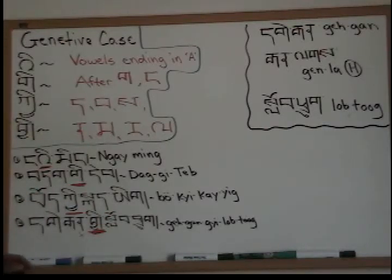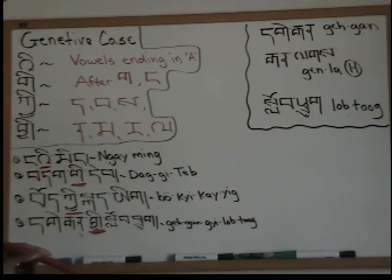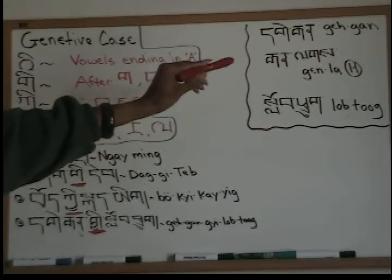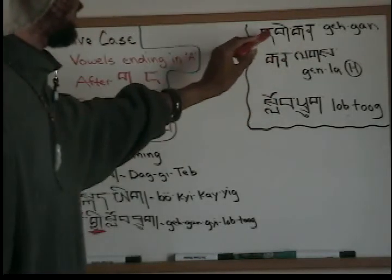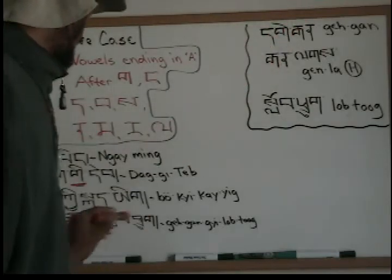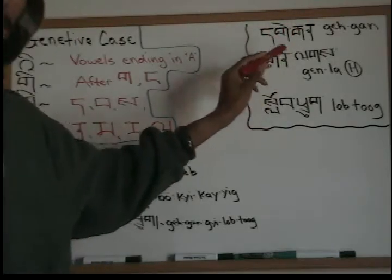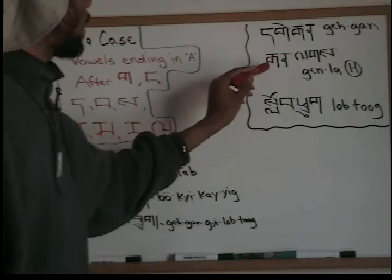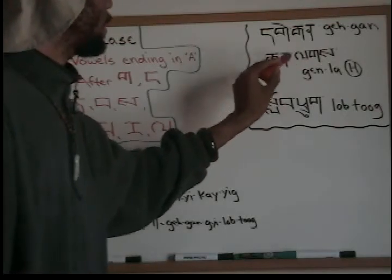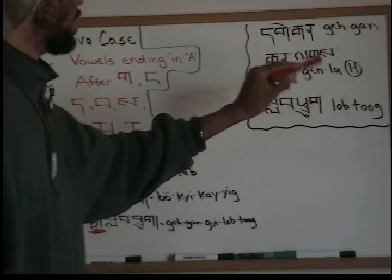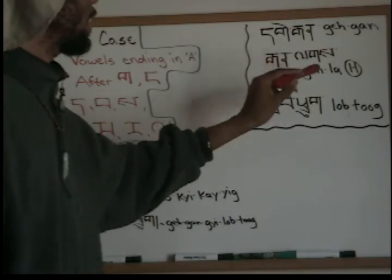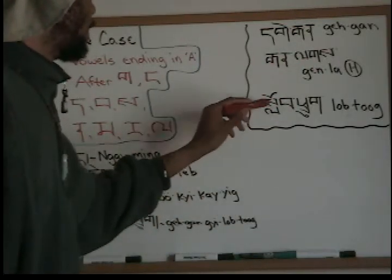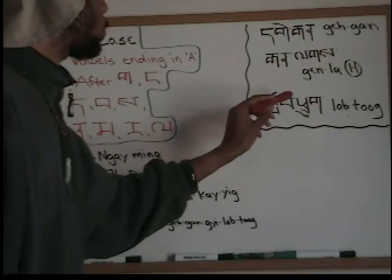I hope you guys are understanding this. I try to make it as easy as possible. That's pretty much it for all of the genitive. Over here I've written some vocabulary: gegan means 'teacher,' and gegan-la also means teacher but is the honorific way of saying it. And lob-tug means 'student.'